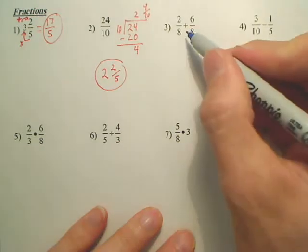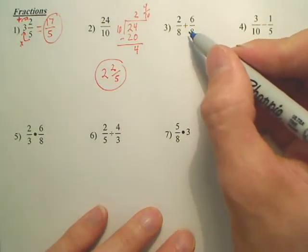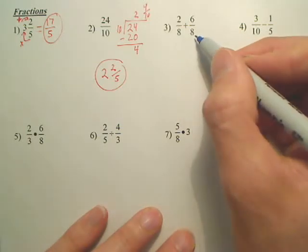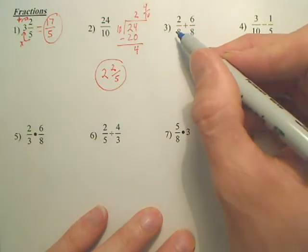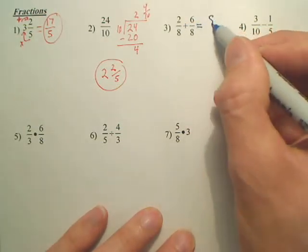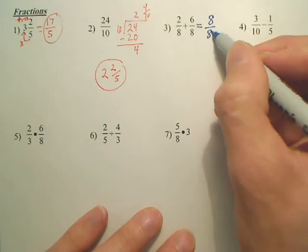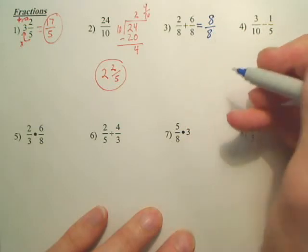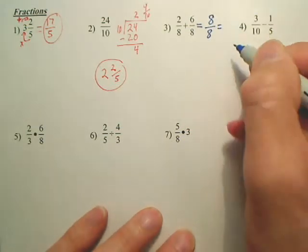Number 3. If I want to add these two fractions, do they have a common denominator? Yeah. So all we basically do when they have a common denominator, simply add the tops. Leave the bottom. I just added the tops, leave the bottom. And what's 8 over 8? 1.